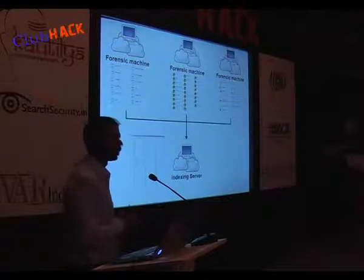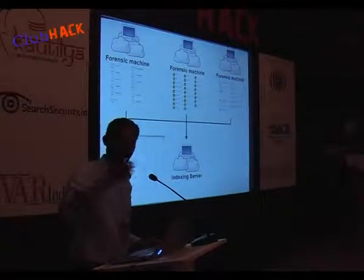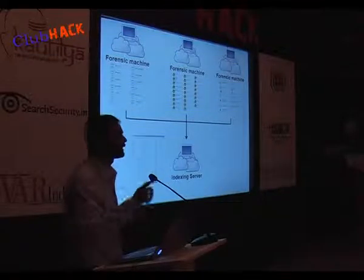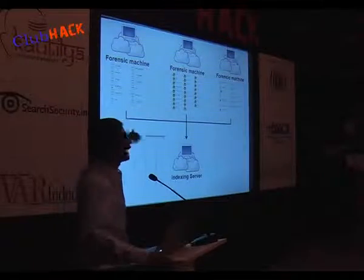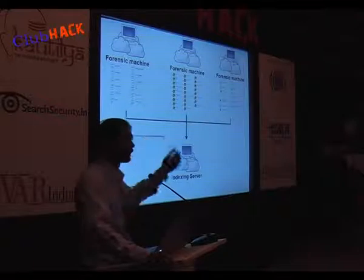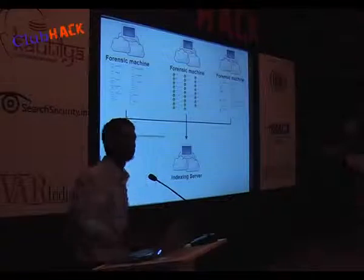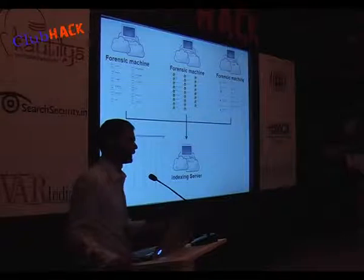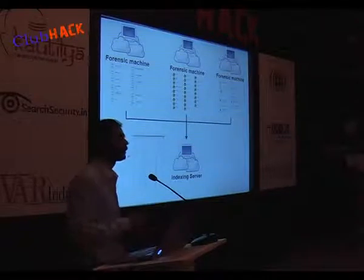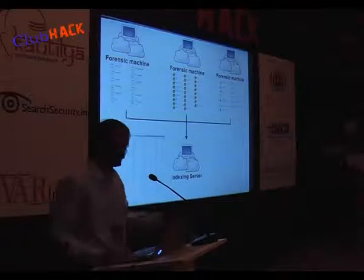To optimize the process, each server would be recovering its data from the image files, and at the same time I have a third indexing server. What the indexing server does is, at runtime, while the forensic machines are recovering data from image files, my indexing server would actually be indexing the data, and I can search through terabytes of information in a matter of a few milliseconds. So at runtime, while data is being recovered, I can index it and search through it.